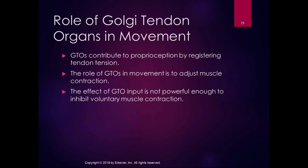Golgi tendon organs contribute to proprioception by registering tendon tension, which tells us what position we're in. The role of Golgi tendon organs in movement is to adjust muscle contraction. Their input alone is not powerful enough to inhibit voluntary muscle contraction, but it does a lot of adjustment in those involuntary postural movements.